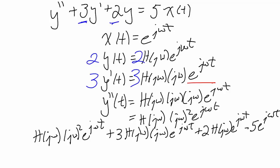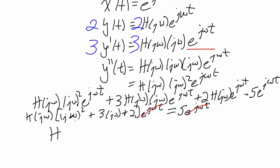We can solve for h of j omega by factoring it out. We're going to factor the e of j omega out too. We'll put it at the end. We can drop the e of j omega t on both sides because they're never equal to 0. And then we wind up with h of j omega equals 5 divided by j omega squared plus 3 j omega plus 2. This is the answer that we're looking for.